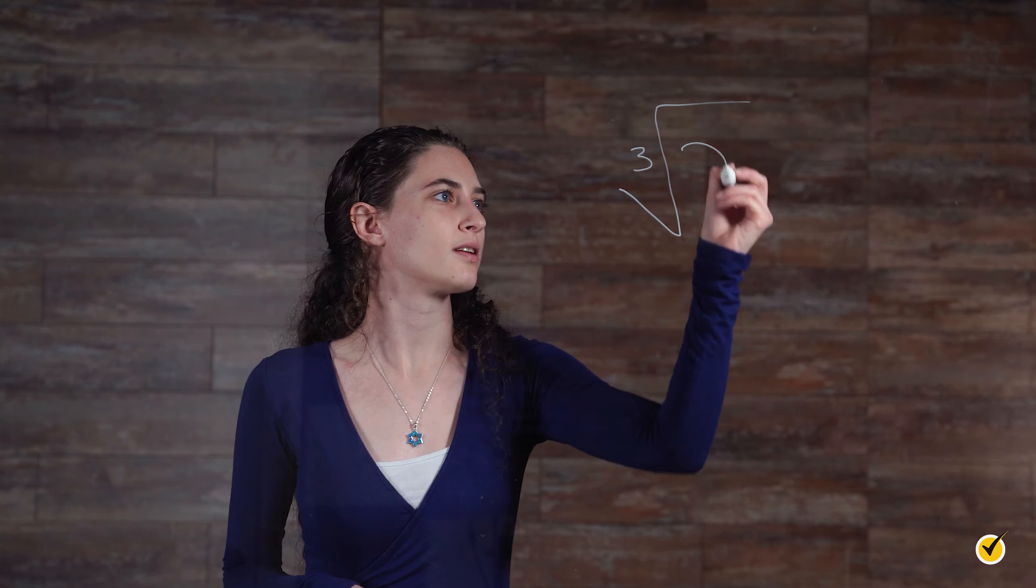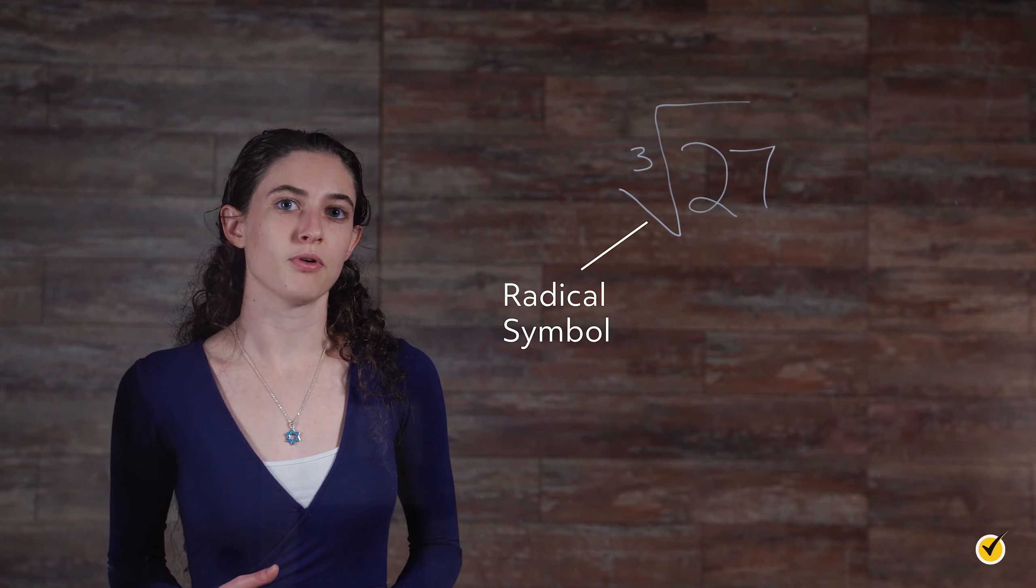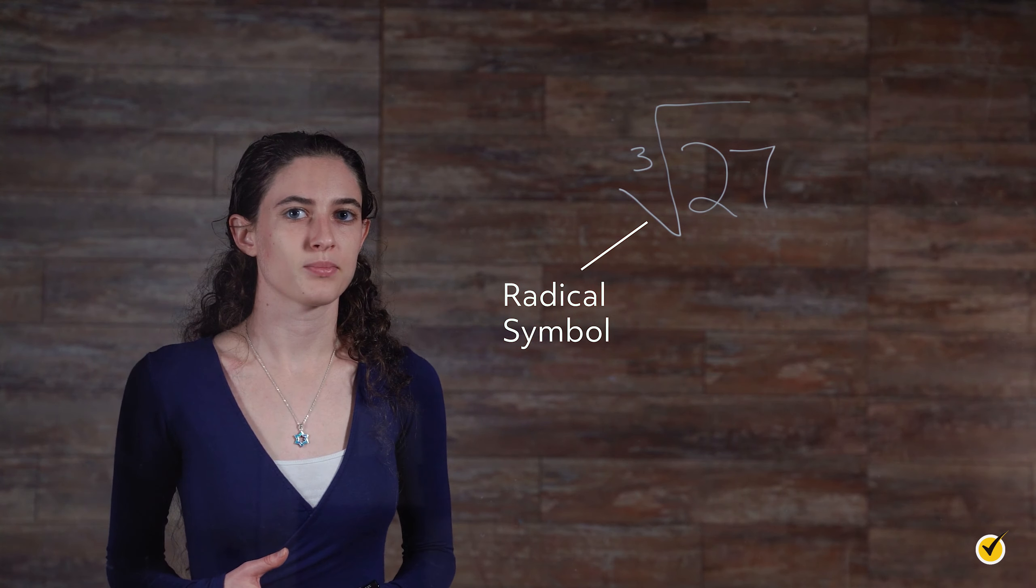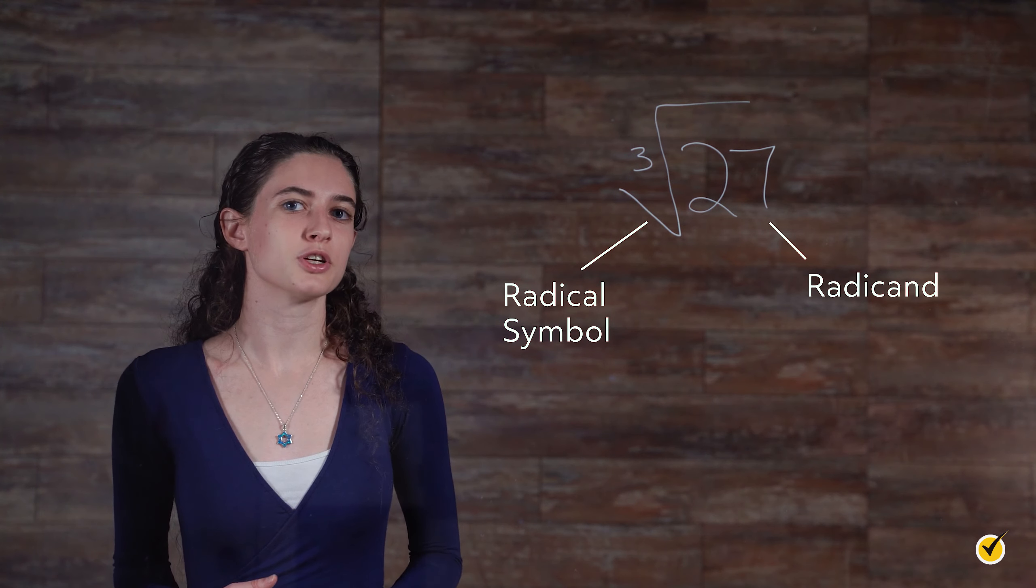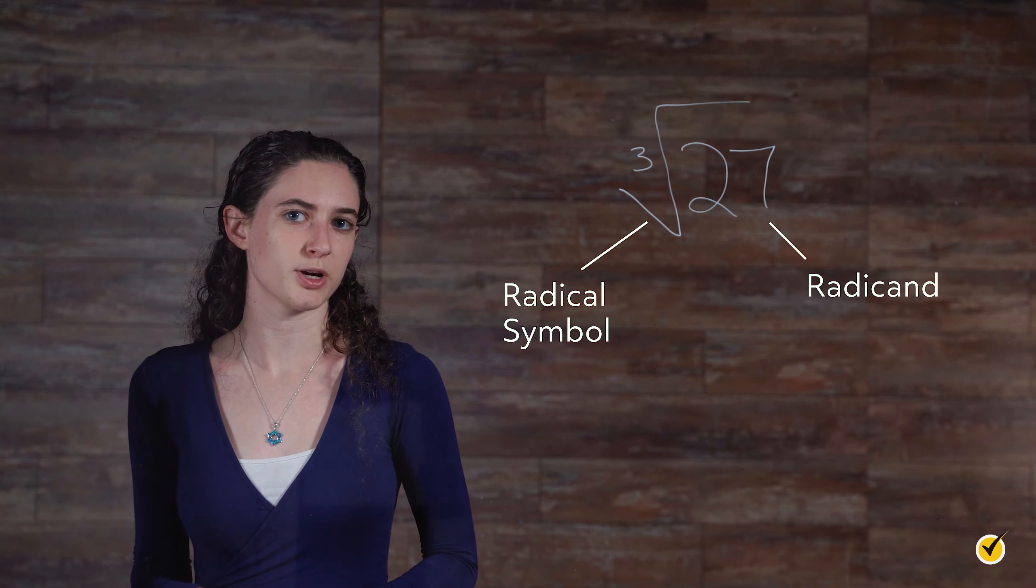To generalize the rule of finding roots, let's introduce the notation of radicals. Let's break down this notation into parts. We're going to look at the cube root of 27. The radical symbol may resemble a division symbol, but it has a very different meaning. What is under the radical symbol is called the radicand, and this can be a number or an algebraic expression. We're going to stick to numbers in this video.